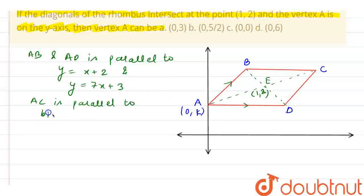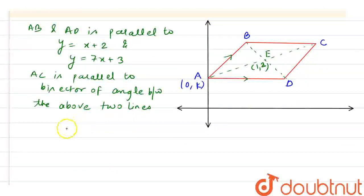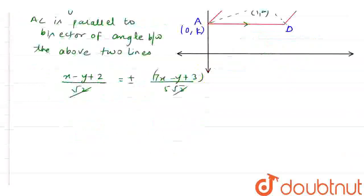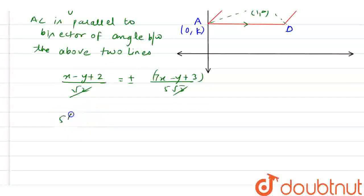bisector of angle, bisector of angle between the above two lines. So, how to find bisector? Bisector can be found as (x - y + 2) / √2 equals plus minus (7x - y + 3) / (5√2). Now, this √2 will get cancelled out and we have 5 times (x - y + 2) equals plus minus (7x - y + 3).